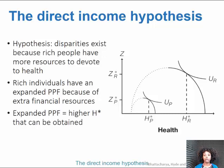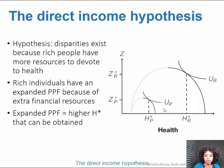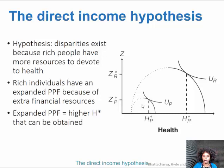So they have an expanded production possibilities frontier because they have more resources. If you look at the poor person's utility curve and production possibilities curve, a point that would be accessible to the rich person would be outside of the poor person's possibilities frontier — a point they would not be able to reach. That's why H star and Z star for the poor individual will be lower than the corresponding values for the rich individual.